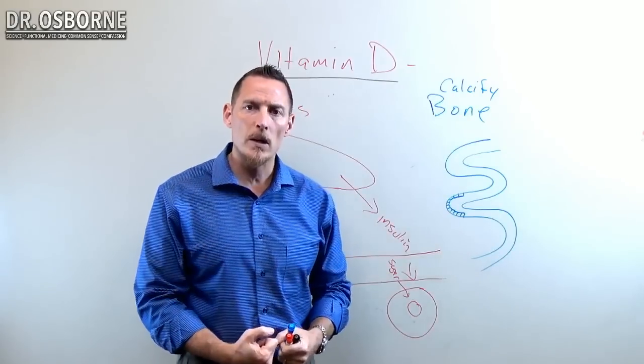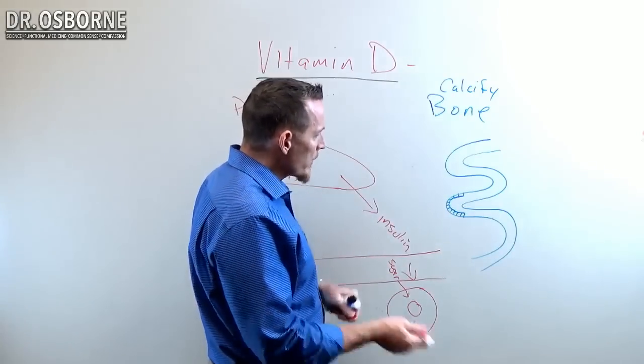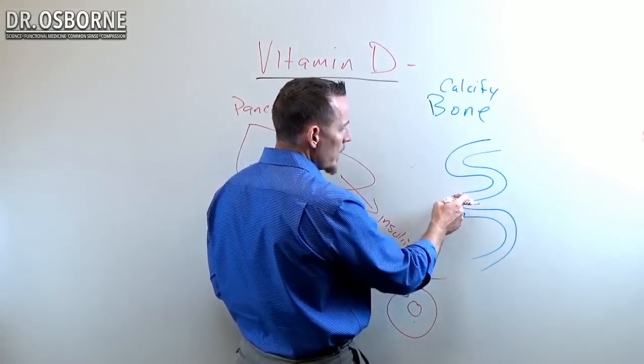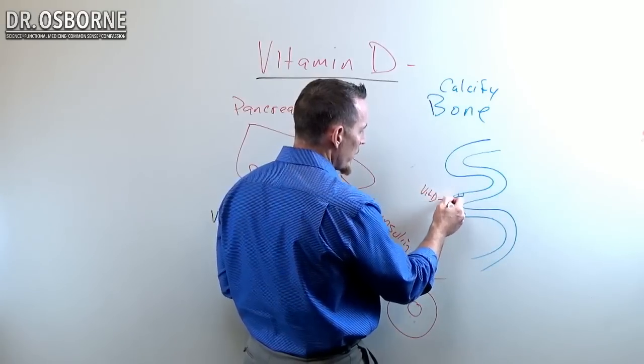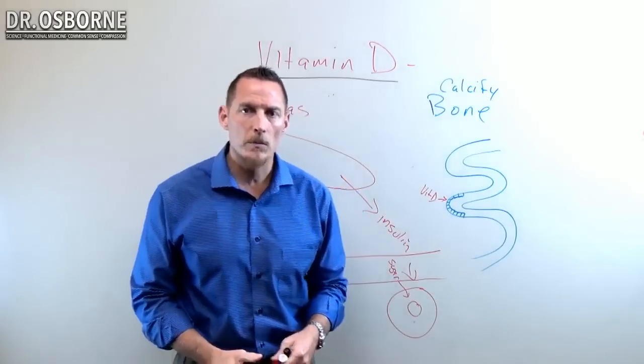There are vitamin D receptors on the nuclei of these different cells. What vitamin D does is it tells these cells to absorb calcium. Without vitamin D, these cells don't absorb calcium very efficiently at all. Your calcium absorption massively reduces.